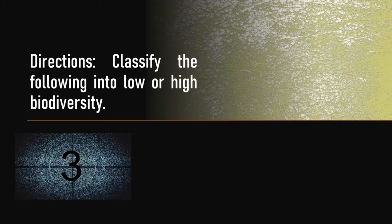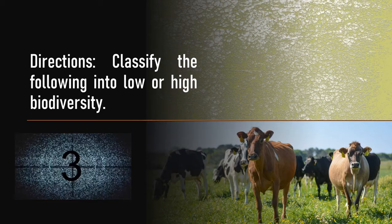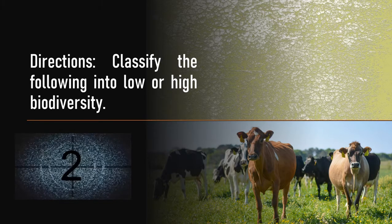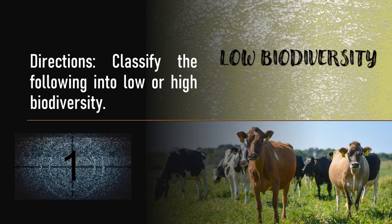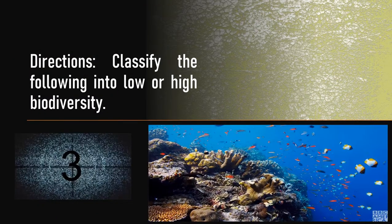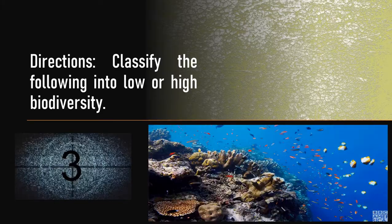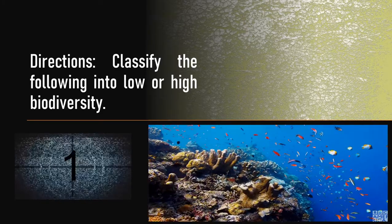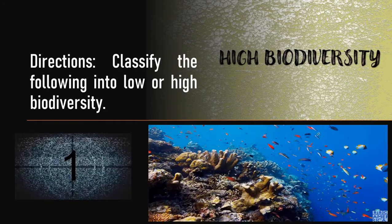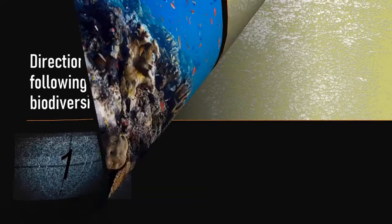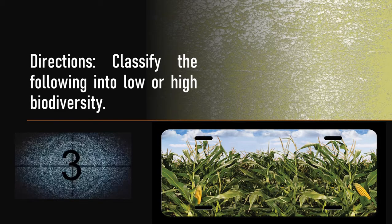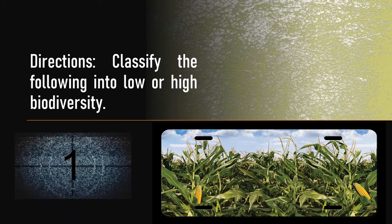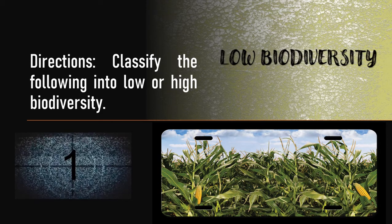Learners, can you classify the following into low or high biodiversity? First, we have cattle farm — low biodiversity. Next, ocean — high biodiversity, that's right! And for the last one, we have corn field — low biodiversity.